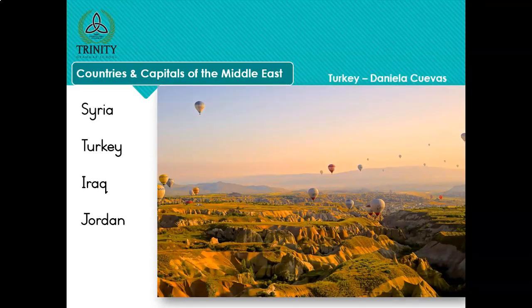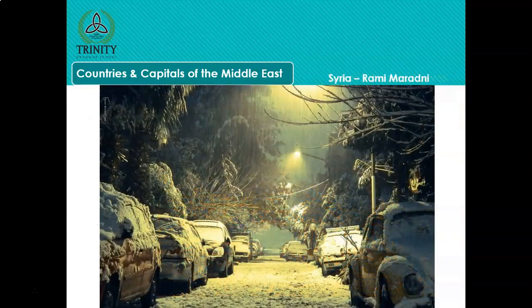That is a photo of a place called Cappadocia in Turkey - doesn't it look beautiful? And I'm going to end on this slide for us to pray. Amazingly enough, this is a photo from Syria - it snows in Syria. It's just such an unlikely photo that I really wanted to include it in this video.